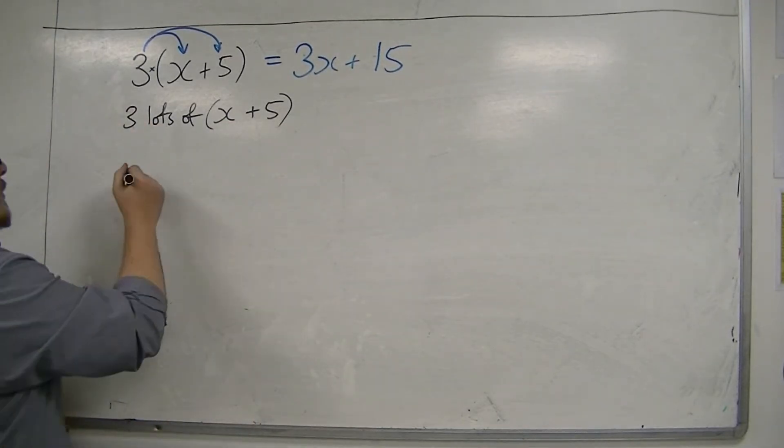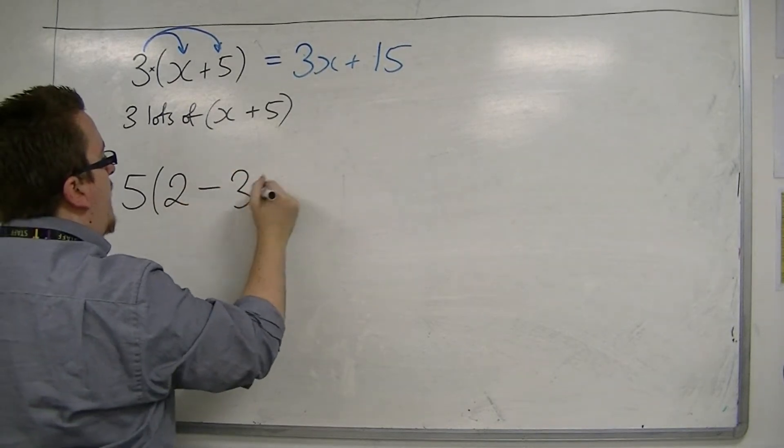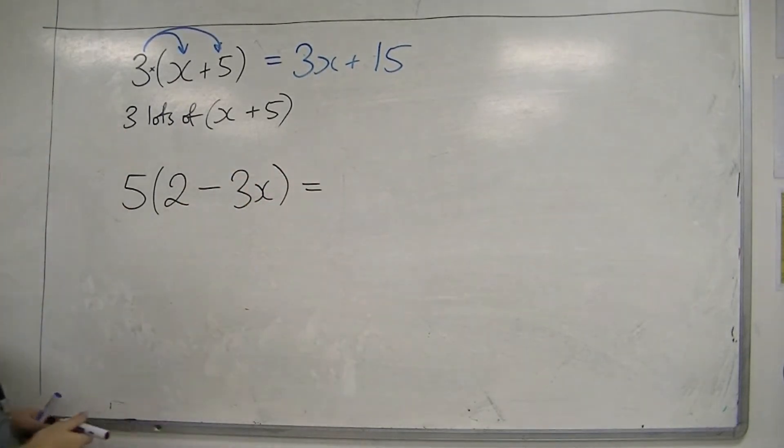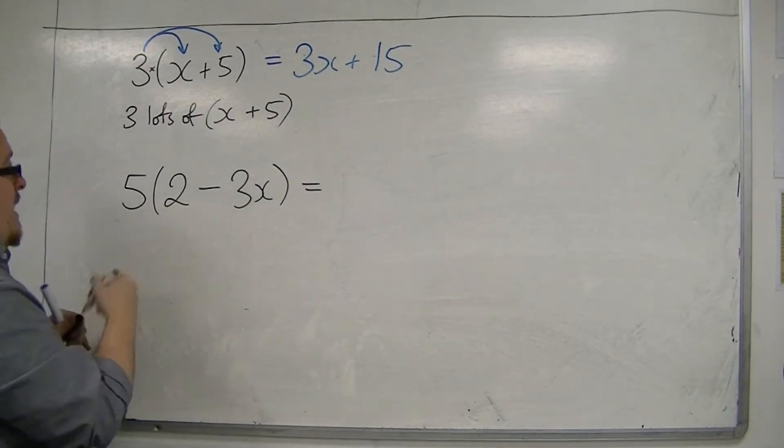Let's look at another one. Let's look at 5, 2 minus 3x. Okay? So that means I've got 5 lots of 2 minus 3x.